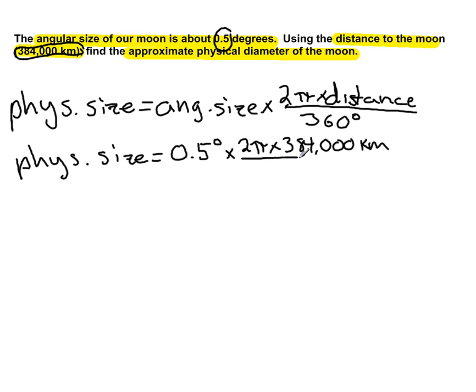All divided by 360 degrees. Let's do a units check. The degrees on the 0.5 degrees angular size is going to cancel with the degrees on the 360 degrees, so the units we're left with are the kilometers which were up on the distance.